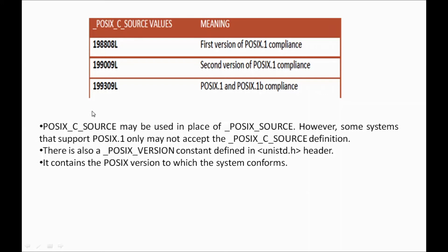There is also one more important constant: _POSIX_VERSION. This macro gives the version of the POSIX standard your system supports. It is defined in the unistd.h header file. _POSIX_VERSION contains the version of the POSIX system you are using.